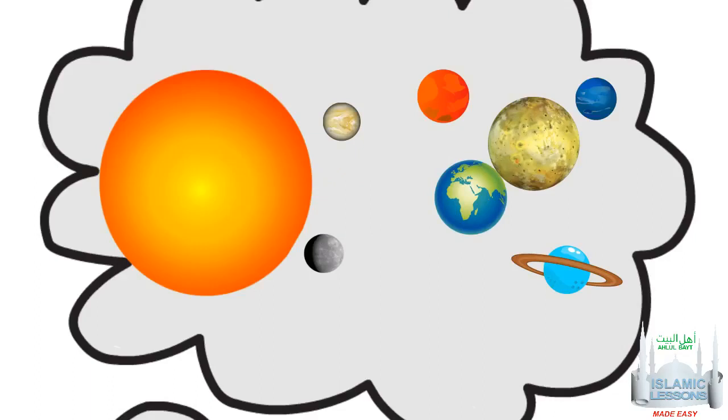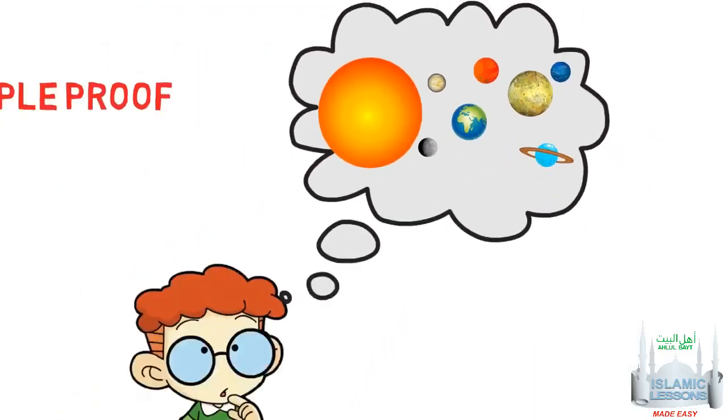Similarly, if the earth was slightly further from the sun, it would be too cold for life. The earth is positioned perfectly in order to support life.